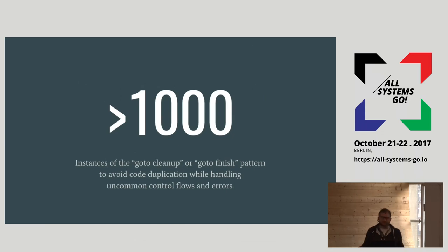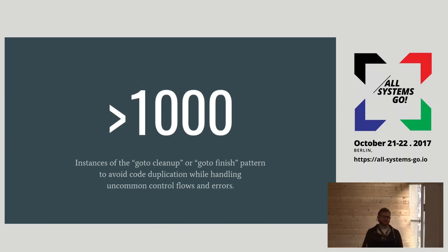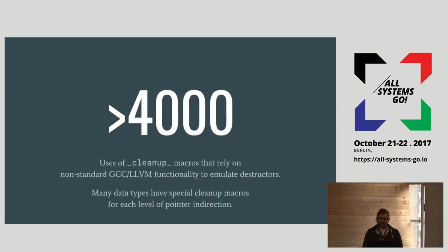We have a lot of patterns used all over the SystemD codebase. There are over a thousand instances of cleanup routines where we have code that does in reverse order all of the allocations that are not automatically cleaned up. This often manifests as: check for error condition, set a return value, then go to a finish routine at the end of the code to do cleanup. Sometimes we even have multiple finish routines because there are different nesting levels of allocations. It's pretty tedious to maintain the reversal of allocations at the end of the code.